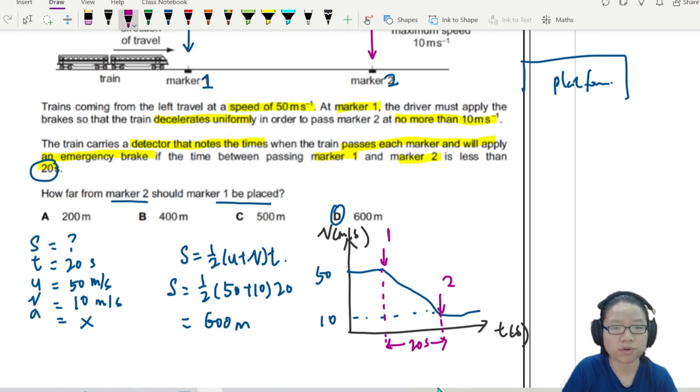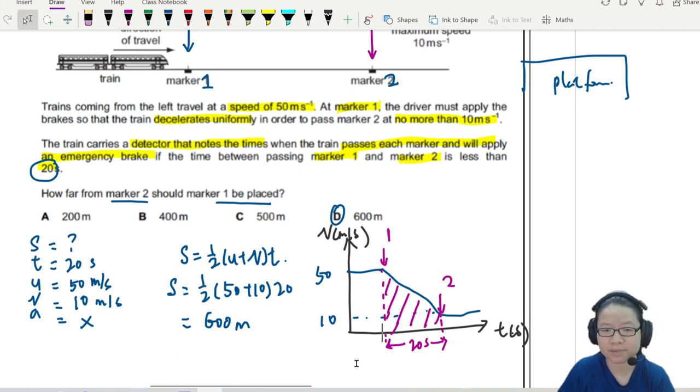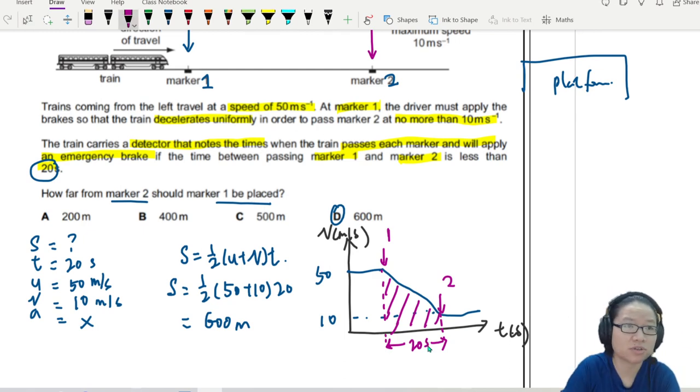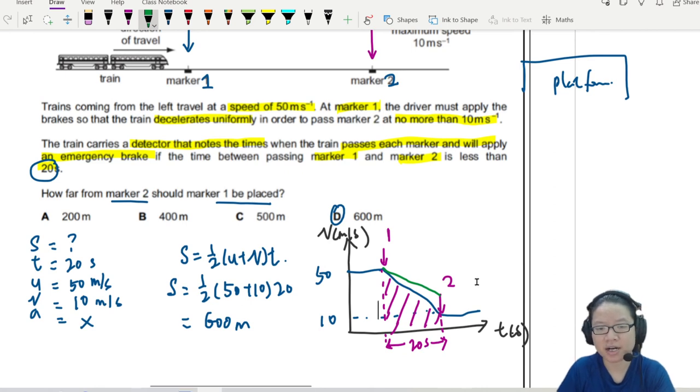So we are looking for the area under this trapezium, which will end up to be the same as the equation here. Sum of the parallel lengths times height. So sometimes drawing the graph can help you see what is going on. Like for example, this actually helps me visualize if the train doesn't decelerate fast enough. Then you can see that in 20 seconds, we will cover a larger area.